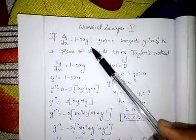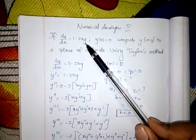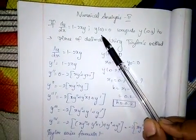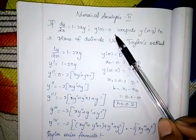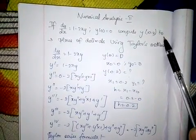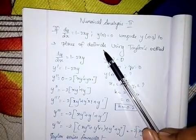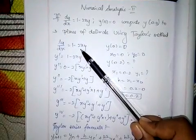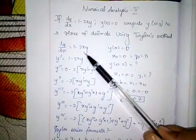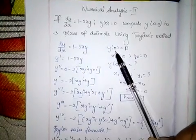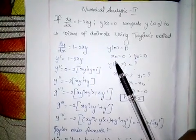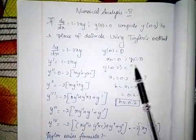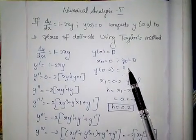If dy/dx is equal to 1 minus 2xy, that is the question. The given is y(0) equals 0. Compute y(0.2) to 3 decimal places using Taylor's method. So we are taking x0 equals 0, y(0) equals 0, that is y0 value. We have to find y(0.2).